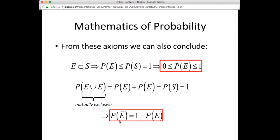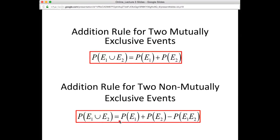For two mutually exclusive events E1 and E2, the probability of their union is just the sum of the individual probabilities. And that is true for any number of mutually exclusive events: for n mutually exclusive events, the probability of their union is simply the sum of their individual probabilities.